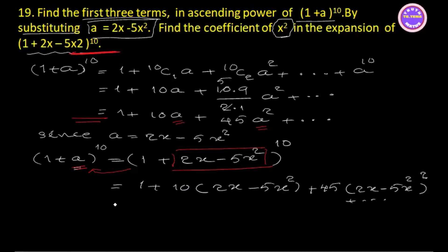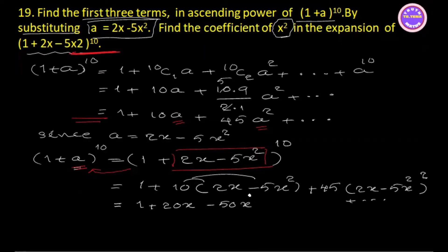So 1 plus 10 times (2x minus 5x squared) gives 20x minus 50x squared plus. Then 45 times the whole square.